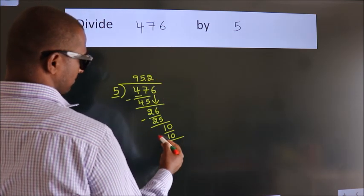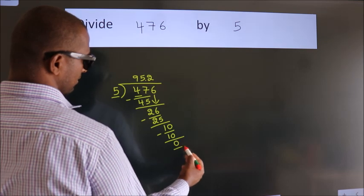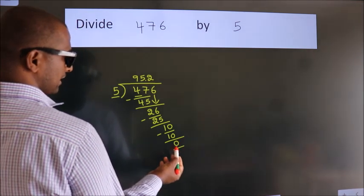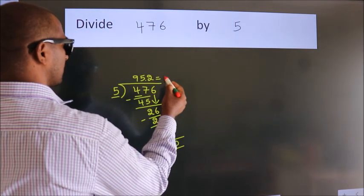Now we subtract. We get 0. We got remainder 0. So this is our quotient.